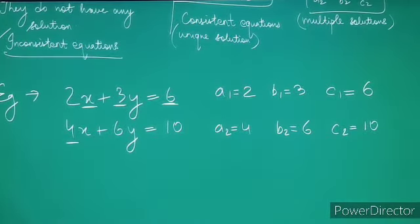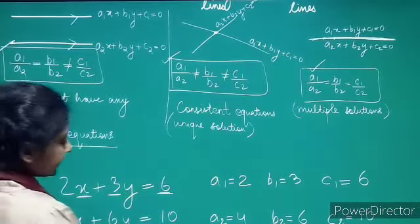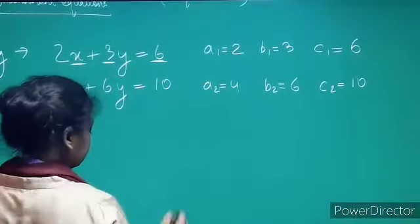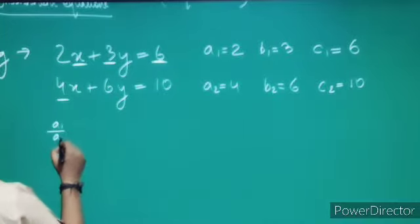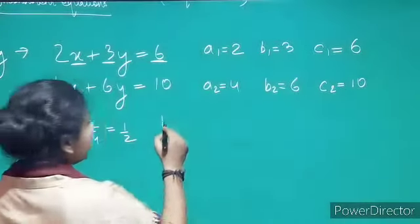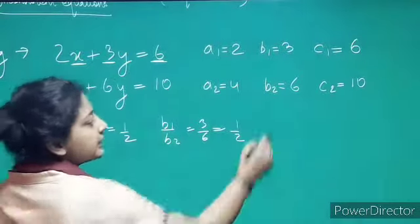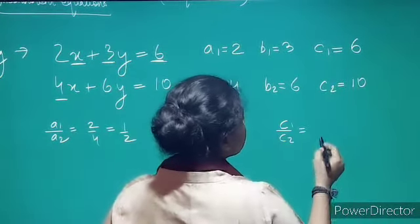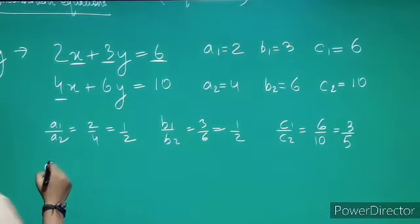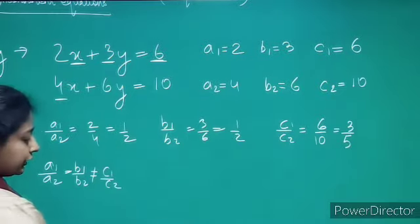Now comparing with our three conditions, let us take the ratios. a1/a2 = 2/4 = 1/2. b1/b2 = 3/6 = 1/2. c1/c2 = 6/10 = 3/5. We can see that a1/a2 equals b1/b2, but this is not equal to c1/c2.